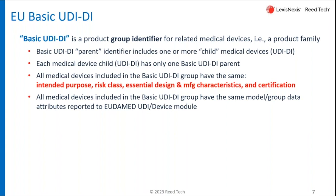This Basic UDI-DI is simply a group identifier for very similar medical devices — like a family name, if you will. That particular identifier, we'll call it a parent, has to have at least one child. So when you identify a Basic UDI-DI, it does have to have one device connected to it.